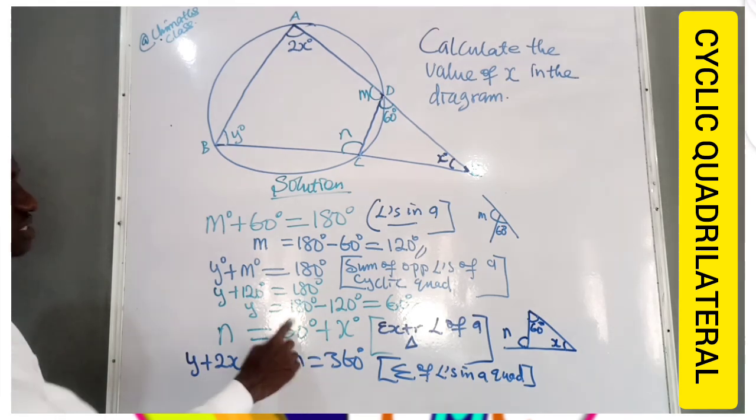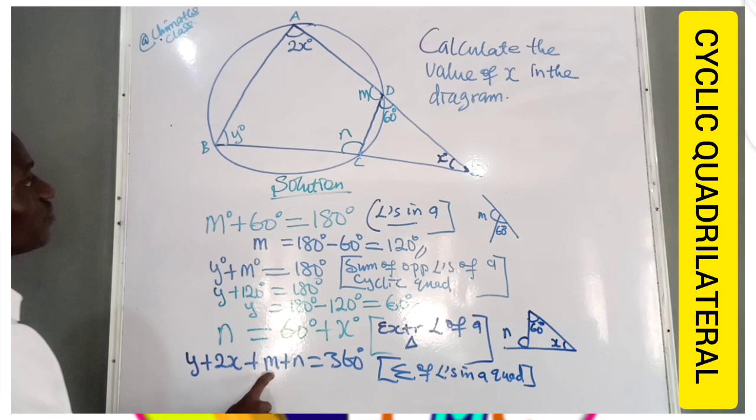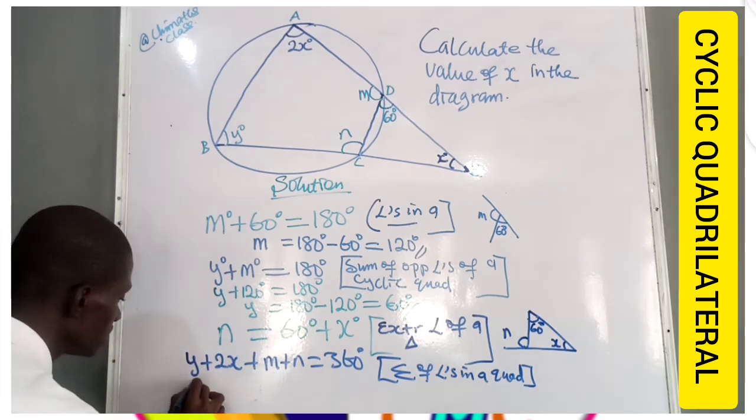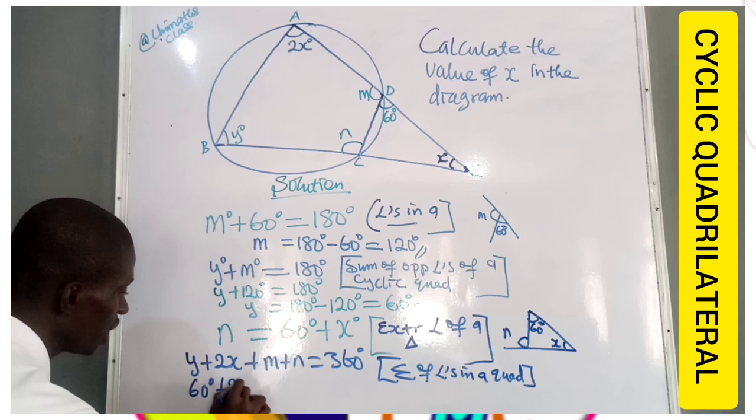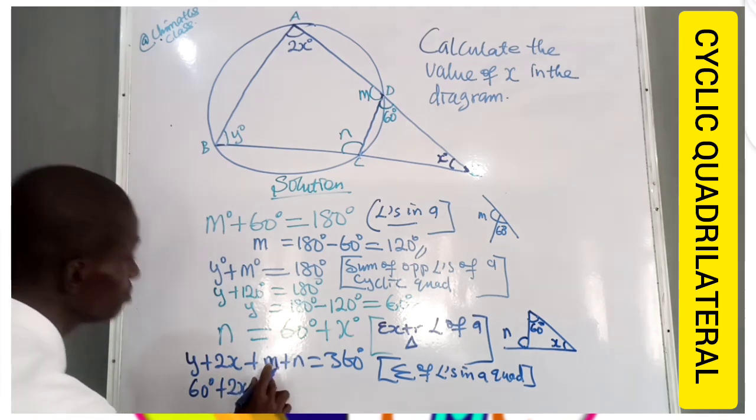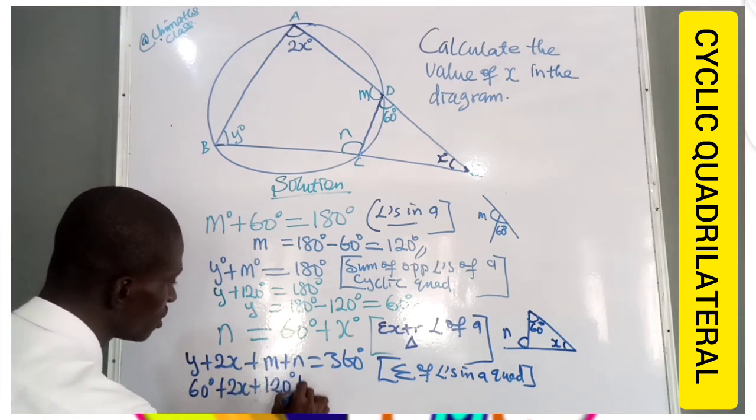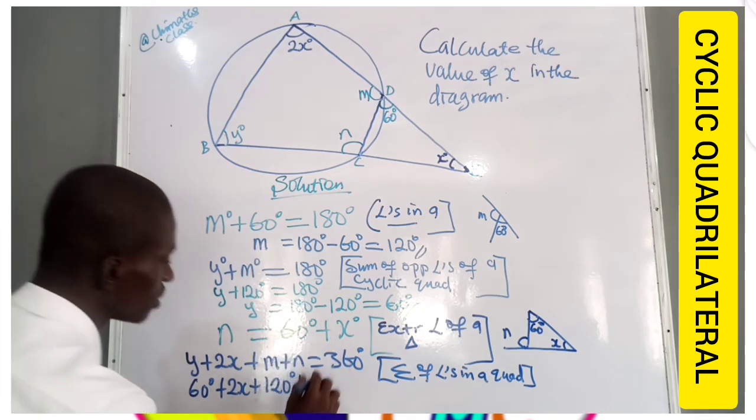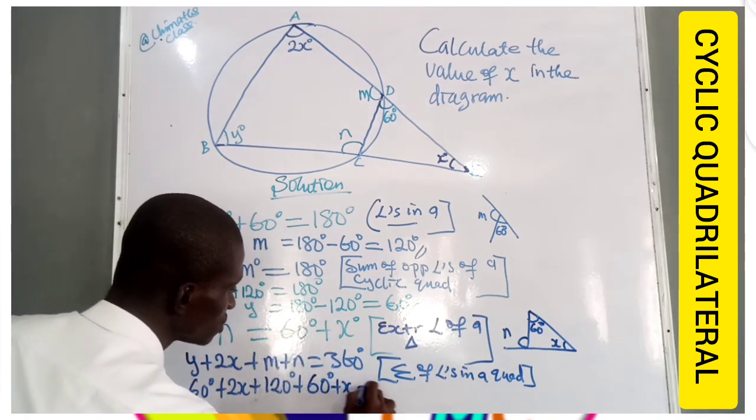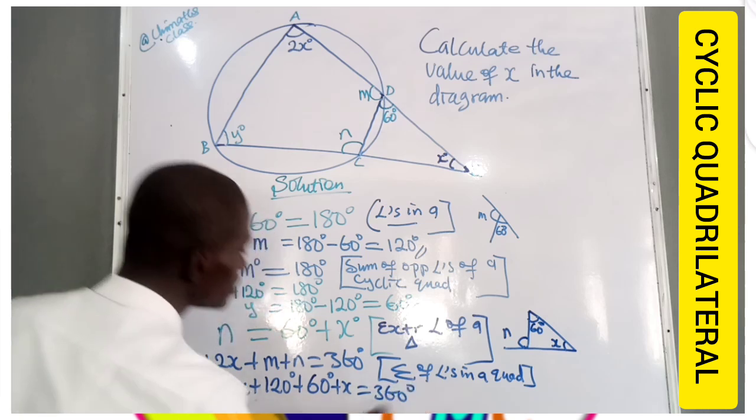Let's substitute 60 plus X as N, and then put the values. Y is 60 degrees plus 2X plus M is 120 degrees plus N is 60 plus X, 60 degrees plus X. So it should be 360 degrees.